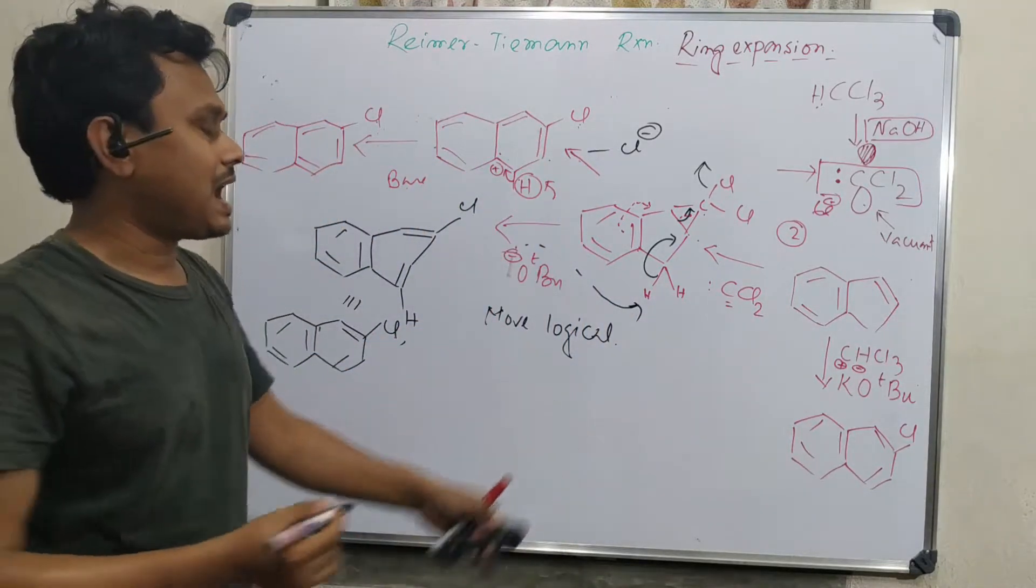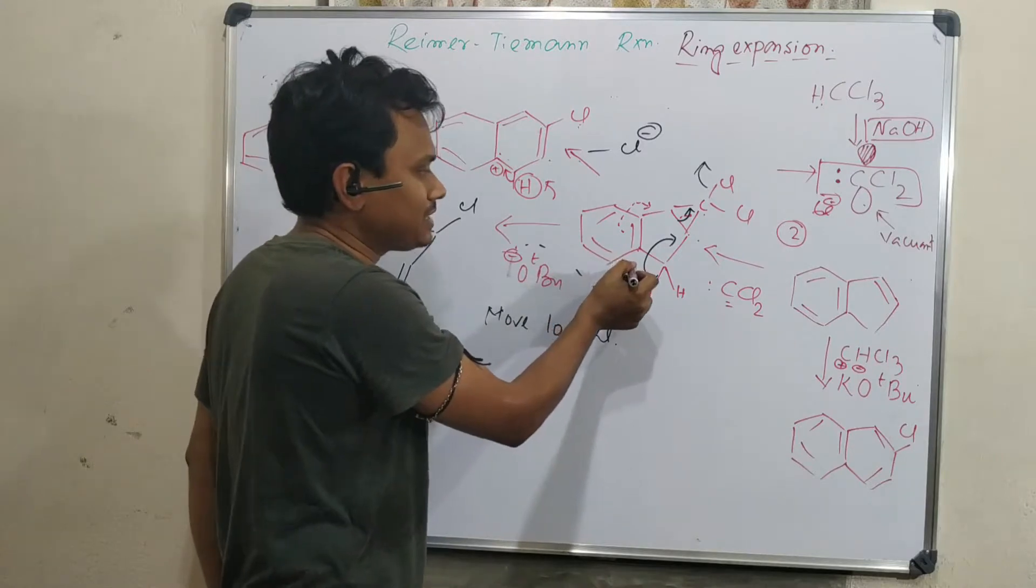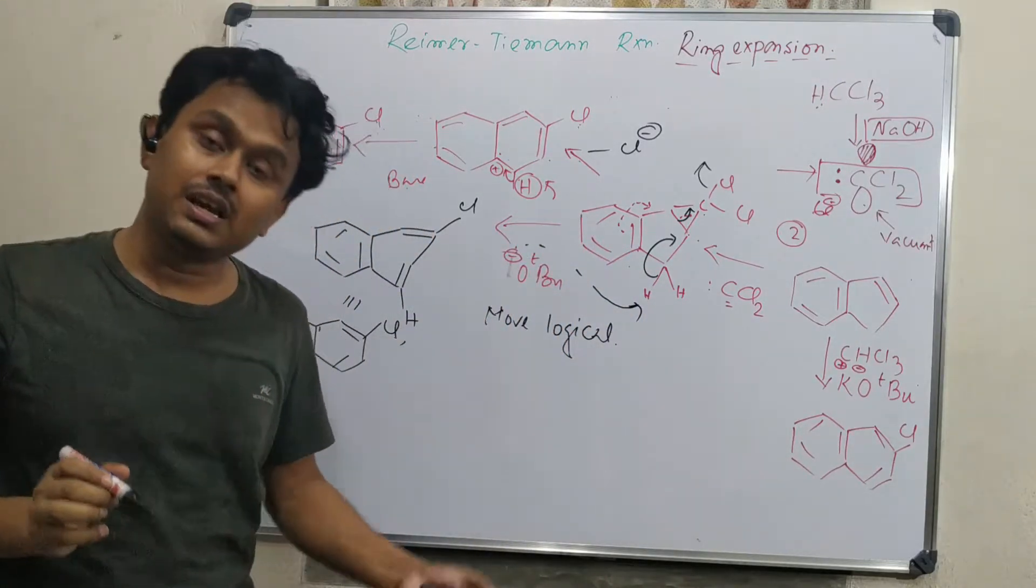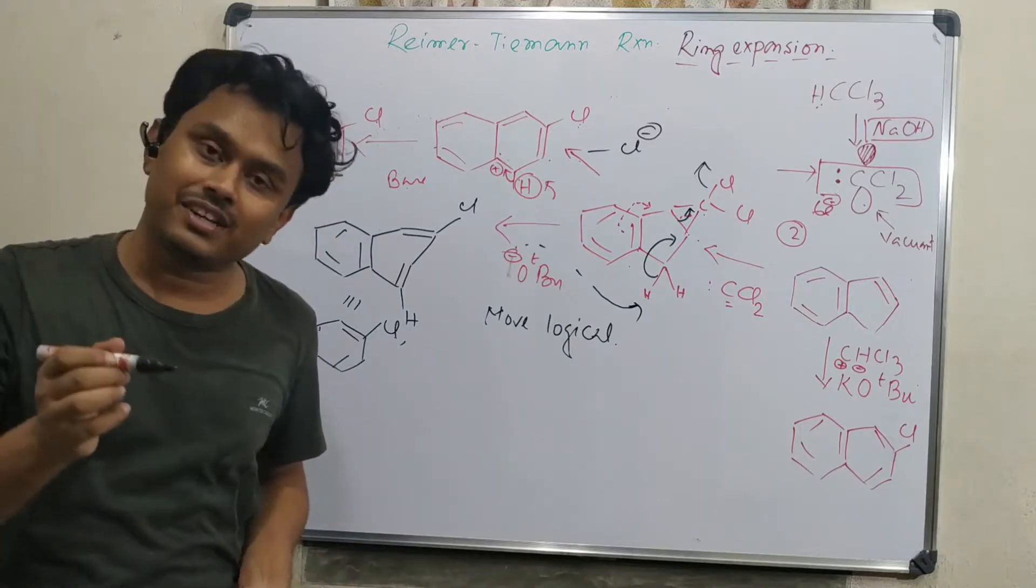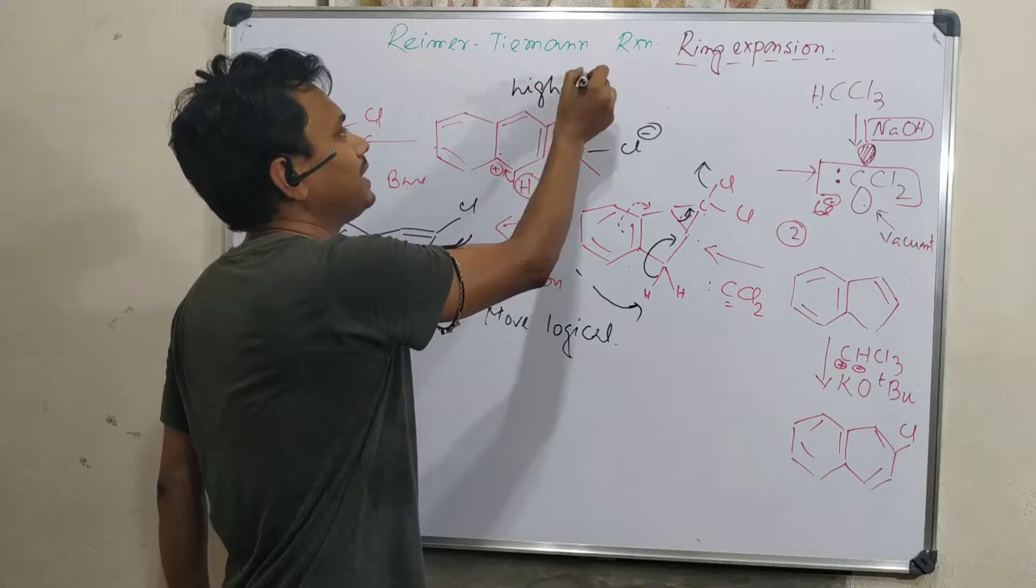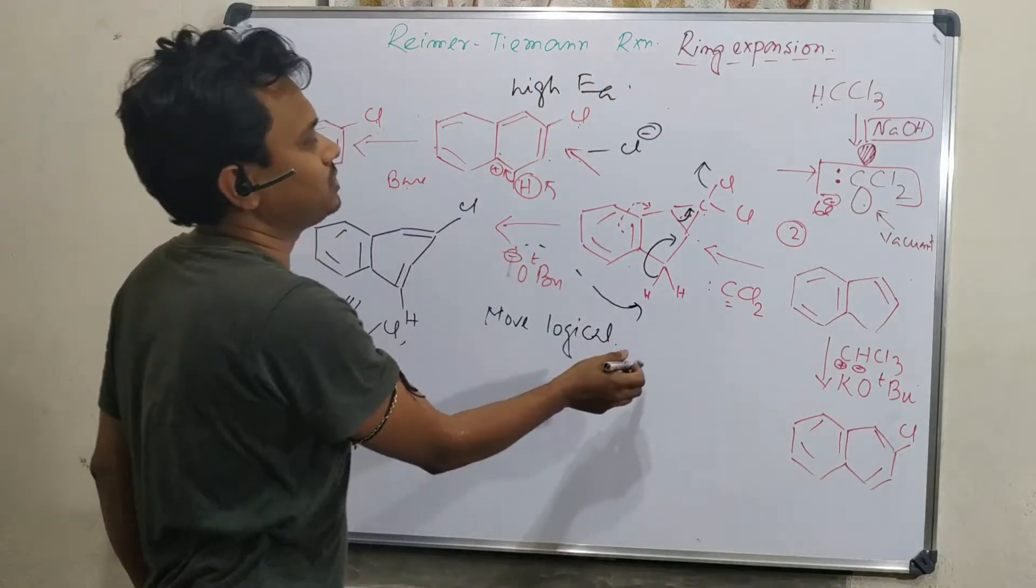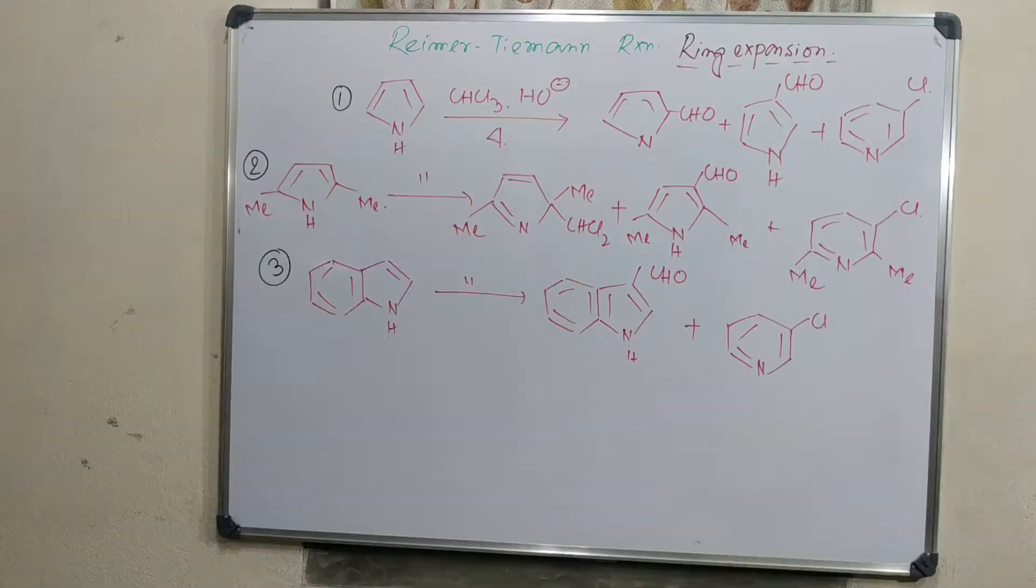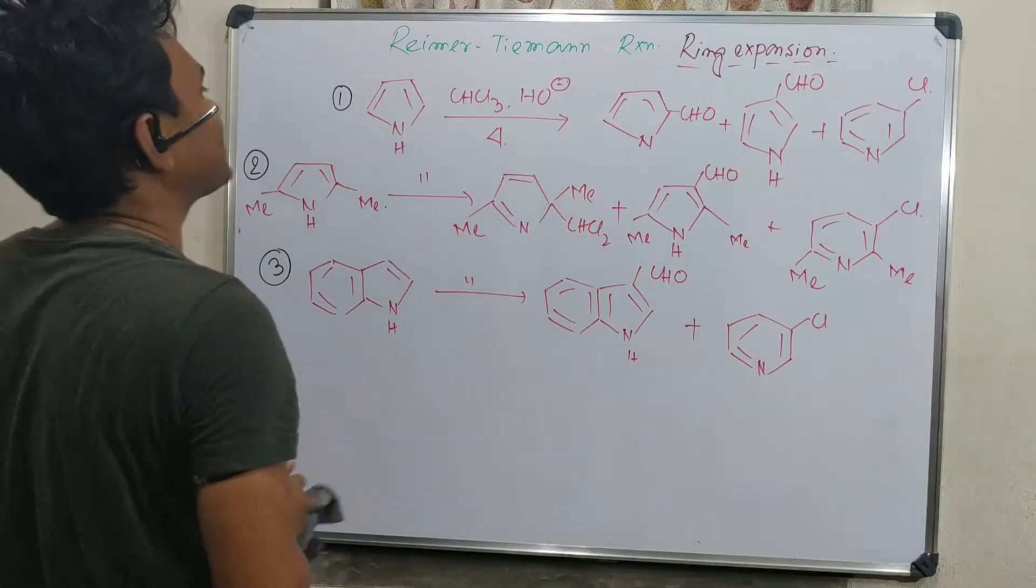In these two ways we can have the final product, but I believe this path is more logical. Why? Because in this case I didn't hamper the aromaticity of another ring, and hampering aromaticity always costs higher energy of activation. This will be higher energy of activation compared to this, so I believe this path is more favorable.